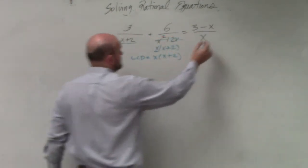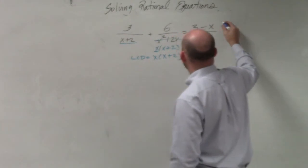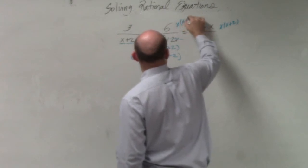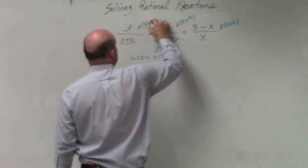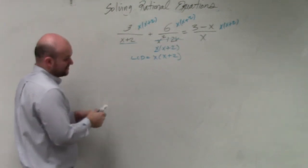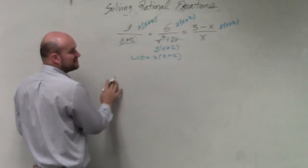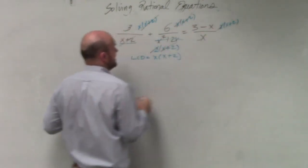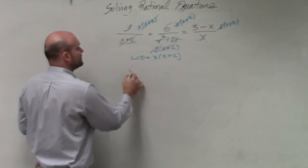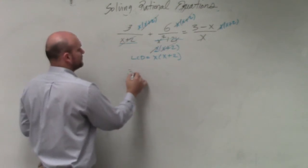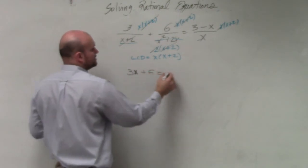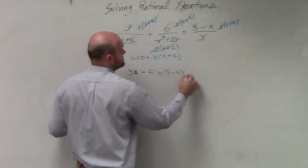But now, to simplify this, I'm going to multiply by my LCD, which is x times x plus 2. x times x plus 2 times x times x plus 2. What you guys will see is my x plus 2's divide out. So here, my x's and x plus 2's divide out. And here, my x's divide out. So therefore, I'm left with 3x plus 6 equals 3 minus x times x plus 2.